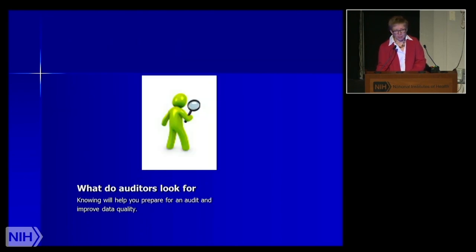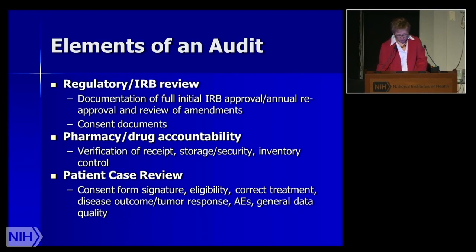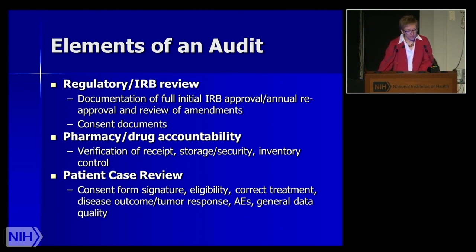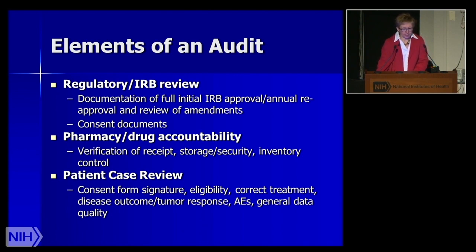Knowing what auditors look for will help improve the quality of any program. Most audits look at the regulatory IRB information — they want documentation of the full review, initial review, and annual review. They'll look at consent documents, the pharmacy, and drug accountability. They want verification of receipt, storage, security, and inventory control. The biggest portion they review are the patient case reviews, looking at consent, eligibility criteria, whether correct treatment was administered, disease outcome and tumor response, any adverse events, and general data quality.